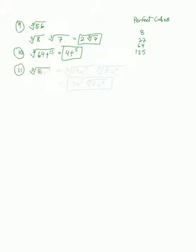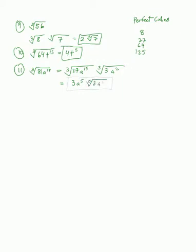Let's do a harder one: the cube root of 81a to the 17th. First we split into two pieces. For 81, the largest perfect cube that goes in is 27, which goes in 3 times, so we write 27 times 3. For a to the 17th, peeling one off gives 16, which is not divisible by 3. Taking one more away gives 15, which is divisible by 3. So we put a to the 15th in the nice piece and a squared as the leftover. The result is 3a to the 5th times the cube root of 3a squared. That is our answer.